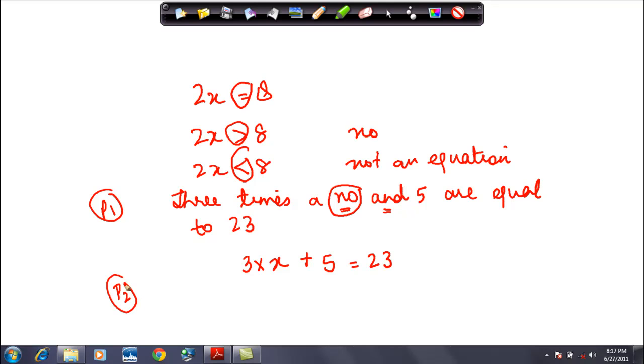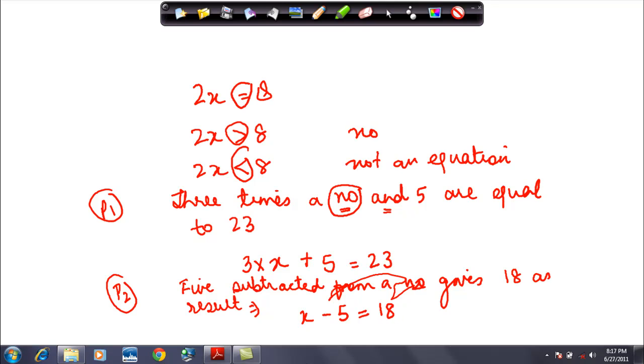Let us write another equation: 5 subtracted from a number gives 18 as result. This means that suppose there is a number, say X, and you subtract 5 from that number. The result is 18. So this is how you write the equation. That is the manner in which you write simple equations.